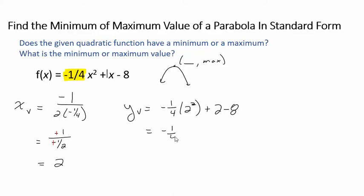negative 1 fourth times 4. That's convenient because those fours will cancel. I don't have to reach for my calculator. Those fours cancel. Negative 1 plus 2 is 1. Take away 8 is negative 7.